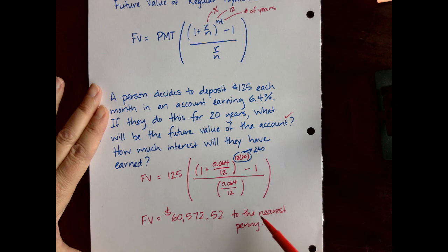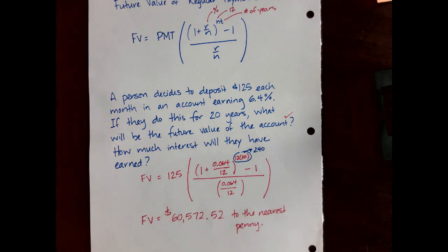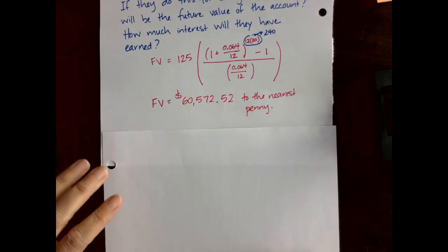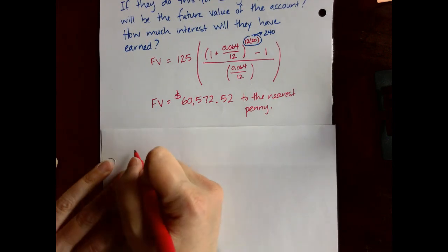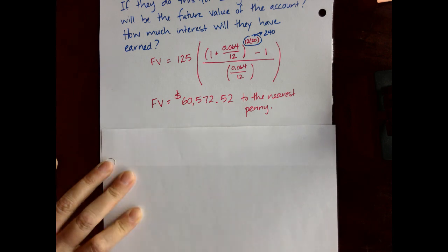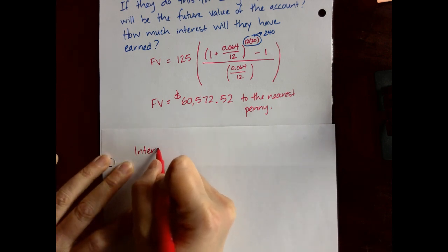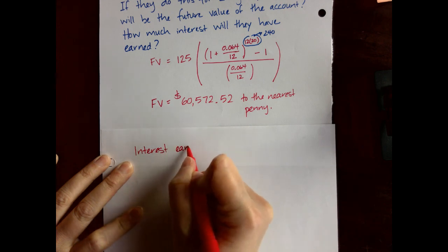This is including all of the payments that the person made as well as any interest that they earned. So the second question was how much interest will they have earned? We need to go find that yet. Interest earned.